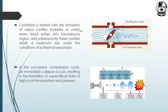Cavities and bubbles start forming when the liquid enters the low pressure region. The cavities attain their maximum size, and in the successive compression cycle an immediate collapse occurs because of the unstable size, which results in the formation of high local temperature and pressure.